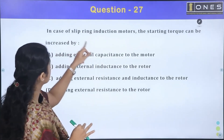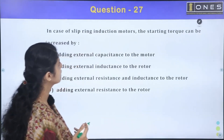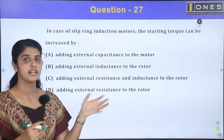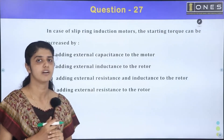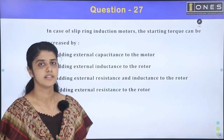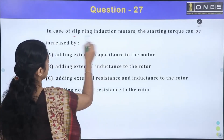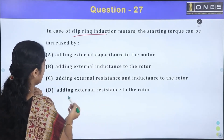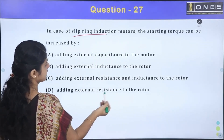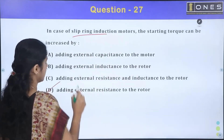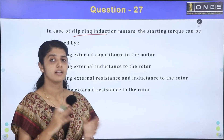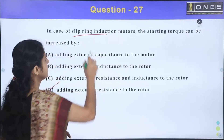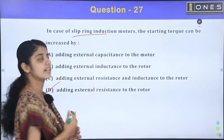In case of slip ring induction motors, starting torque can be increased by adding external resistance to the rotor circuit. External resistance is applied to the rotor, which allows us to increase the starting torque in slip ring induction motors.